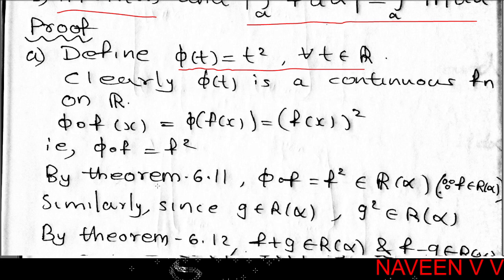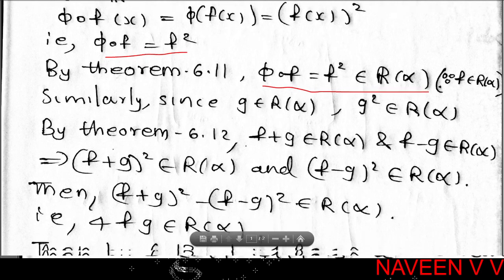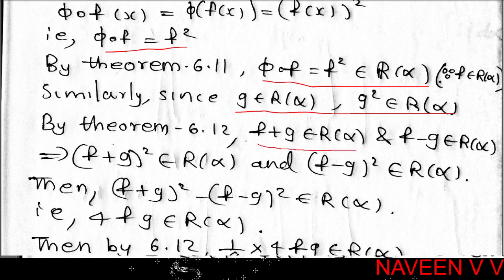So Theorem 6.11 applies: φ∘f, where f(x) = f², belongs to R(α). If f belongs to R(α) and g belongs to R(α), then f + g belongs to R(α) by Theorem 6.12.